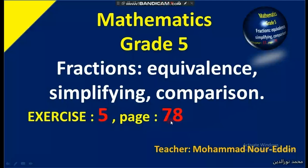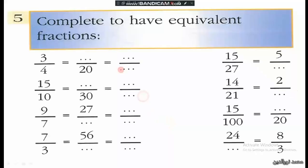Exercise 5 on page 78: complete to have equivalent fractions. In this exercise we have to fill in the blanks. Here we have 4 becoming 20, so we multiply by 5. We do the same on the upper side for the numerator: 3 times 5 is 15.